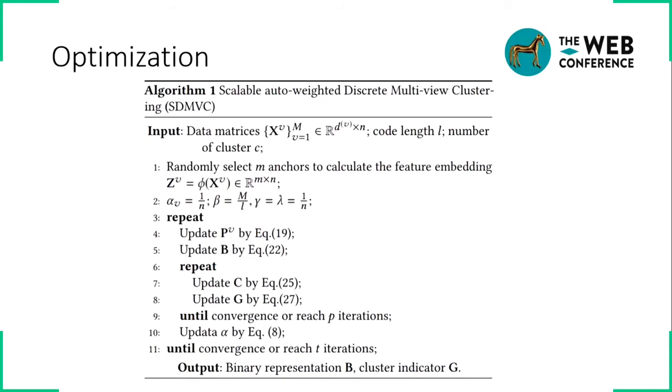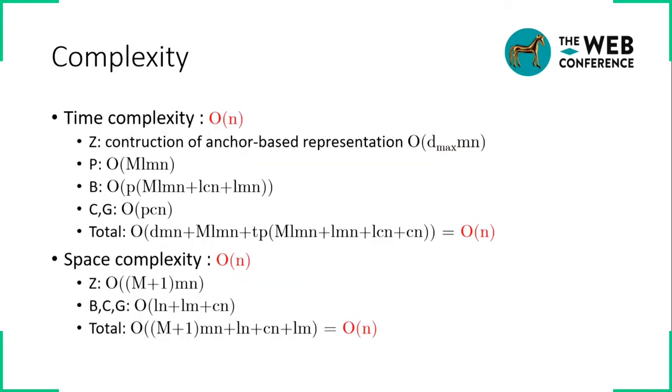We adopt alternating optimization to iteratively update each variable. The algorithm is clear and easy to implement. Now, we analyze the time complexity and the space complexity of our proposed method. Both of them are linear to the number of samples n.